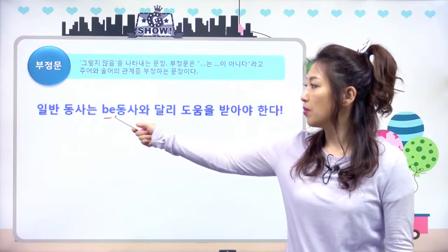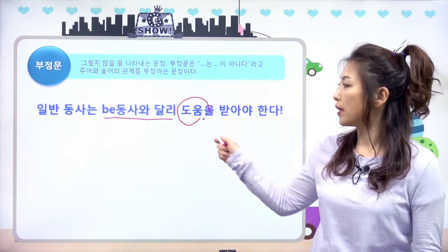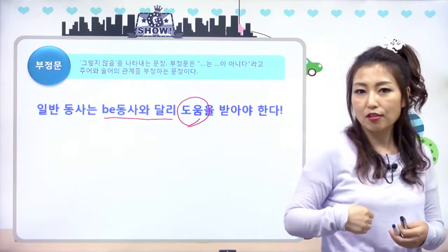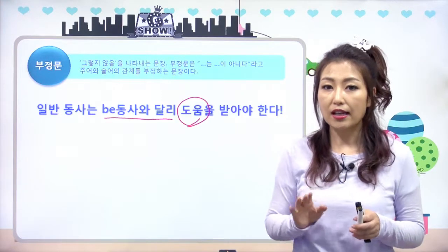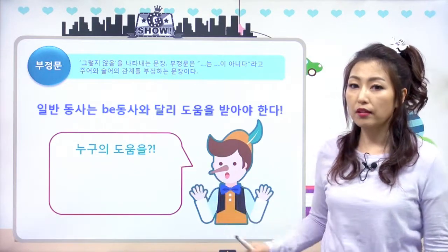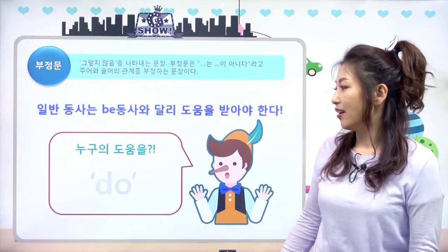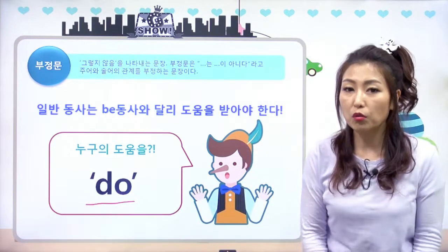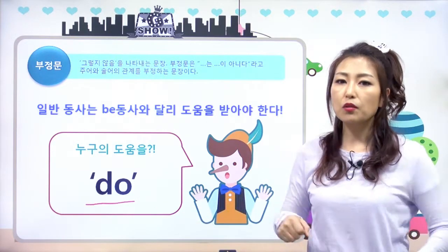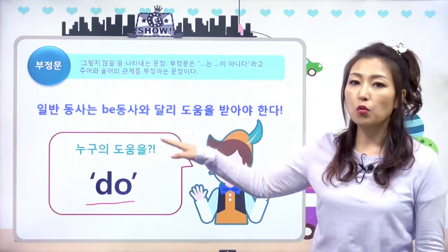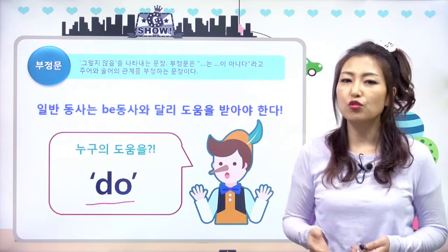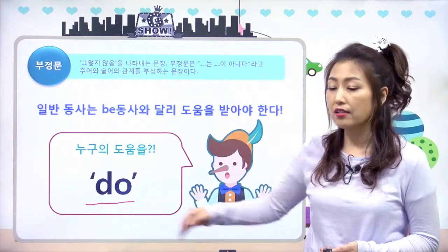일반 동사는 비동사처럼 is, isn't처럼 되는 게 아니라 도움을 받아야 돼요. 누구의 도움을 받아요? do의 도움을 받아요. 여기서 do는 '하다'라는 뜻을 가진 일반 동사가 아니라, 다른 동사들의 부정문도 만들어주고 의문문도 만들어주는 도움을 주는 동사의 do인 거예요.